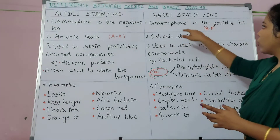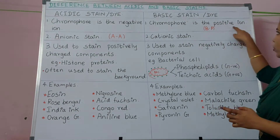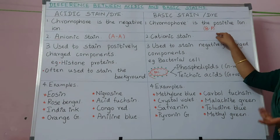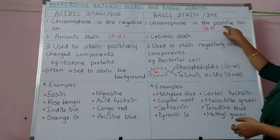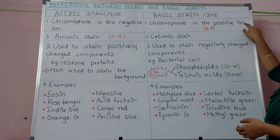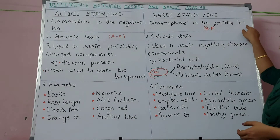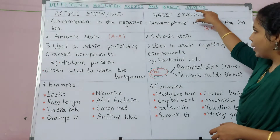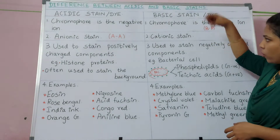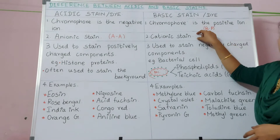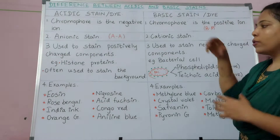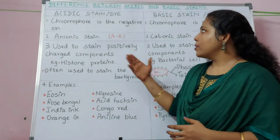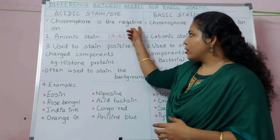In case of basic stain, the chromophore is the positive ion — B for basic, P for positive, like that we can remember. The positive ion means cation, so this basic stain is also known as cationic stain.